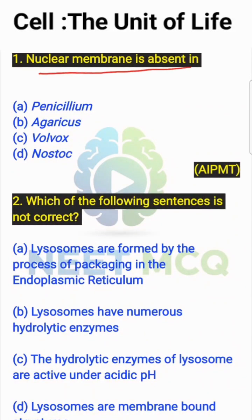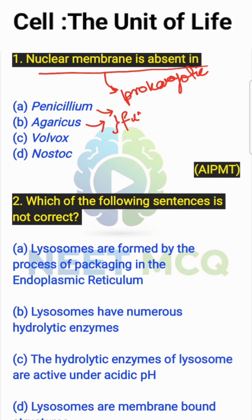Nuclear membrane is absent in — we know nuclear membranes are absent in prokaryotic cells. Here, Penicillium and Agaricus are both fungi, and Volvox is an algae. Fungi and algae are eukaryotic cells.